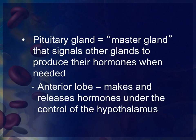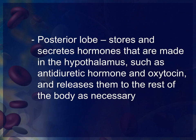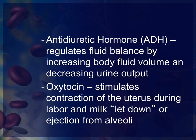The anterior portion of the pituitary makes and releases hormones and is under the control of the hypothalamus. The posterior lobe stores and secretes hormones made in the hypothalamus, such as antidiuretic hormone (ADH) and oxytocin. ADH regulates fluid balance by increasing fluid retention and decreasing urine production. Oxytocin stimulates contraction of the uterus during labor and allows milk to come in after the mother has given birth.